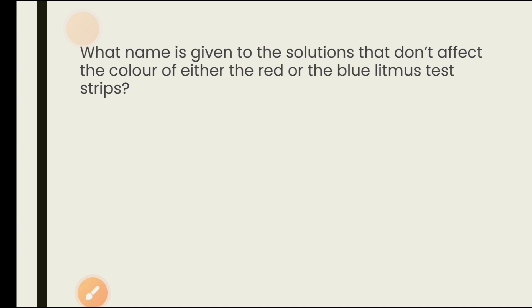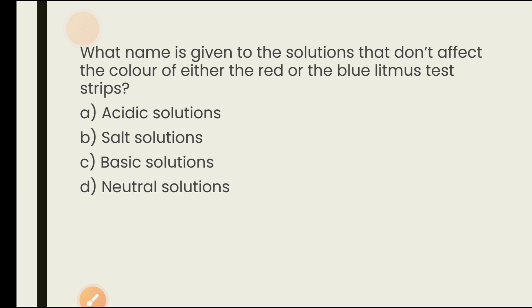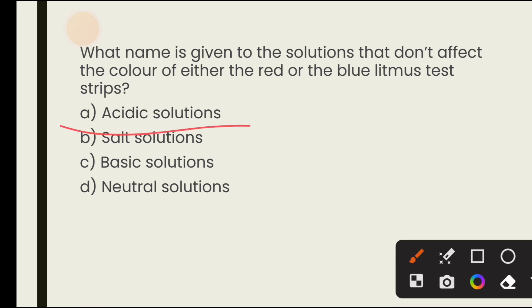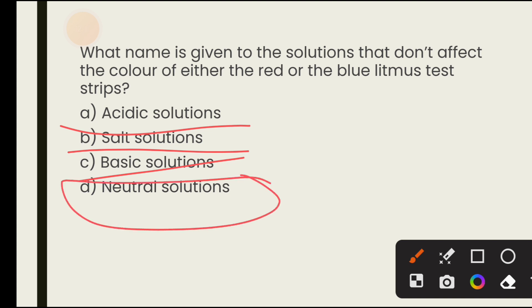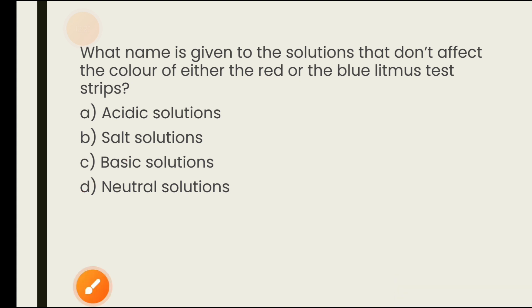What name is given to a solution that does not affect the color of either the red or blue litmus test strips? Options are acidic solution, salt solution, basic solution, neutral solution. A neutral solution has no effect on litmus paper. The answer is D — neutral solution.